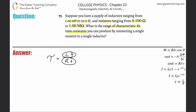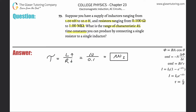So if I take the largest inductor divided by the smallest resistor, I'll find the largest time constant. The largest inductor is 10 henrys and the smallest resistor is 0.1 ohms, so the largest time constant is 100 seconds.